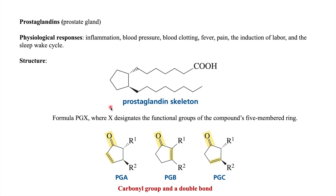We represent prostaglandin with the formula PGX, where X designates the functional group present on the cyclic ring. For example, PGA, PGB, and PGC — they contain a carbonyl group with a double bond. In PGA the double bond is on the left side, in PGB the double bond is on the right side, and in PGC it is on the bottom side.